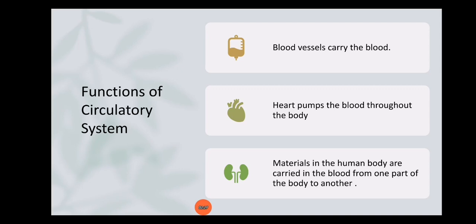The circulatory system transports blood throughout the human body. This blood carries nutrients and oxygen that are transported throughout our body. The heart pumps the blood throughout the body, and materials in the human body are carried in blood from one part of the body to another.